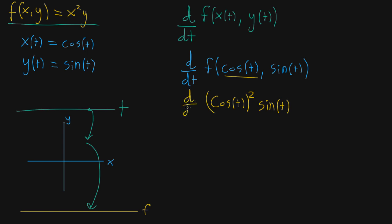We're just taking this derivative. The pattern that we'll see is going to lead us to the multivariable chain rule, and it's actually kind of surprising when you see it in this context, because it pops out in a way you might not expect. Continuing along, when you take the derivative of cosine squared of t times sine of t, you do the product rule: left d-right plus right d-left. The left is cosine squared of t — we just leave that as it is — multiplied by the derivative of the right, which is cosine of t.